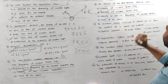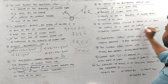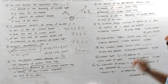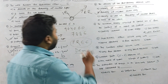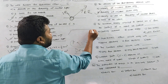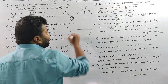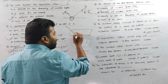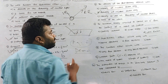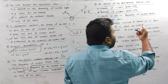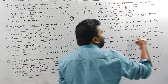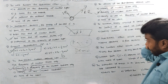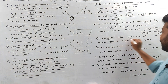The minimum energy required to remove an electron from the surface of the metal is called the work function. The work function is the amount of energy required to remove an electron from the surface of a metal.